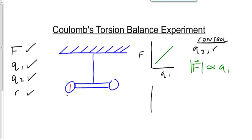Next, he manipulates Q2. When he does that, he finds, sorry, he controls Q1 and R. And when he does that, he finds that, once again, we get a straight line, which means that F is directly related to Q2.